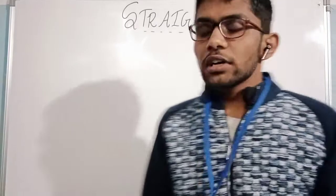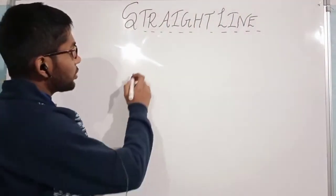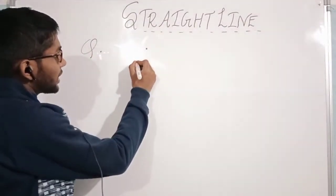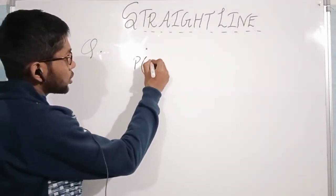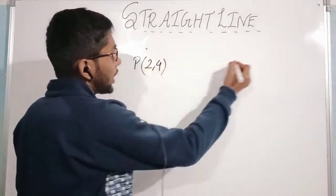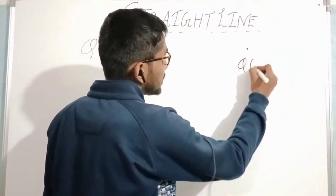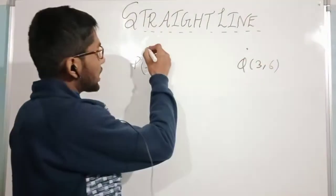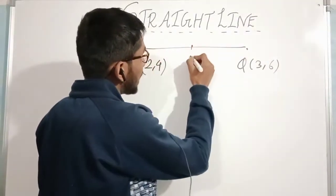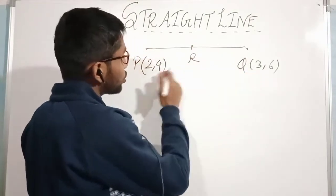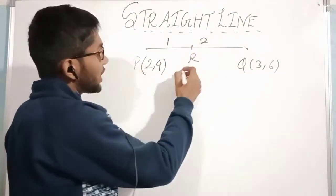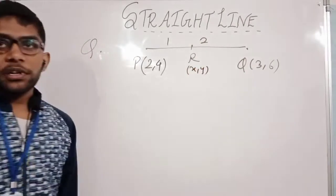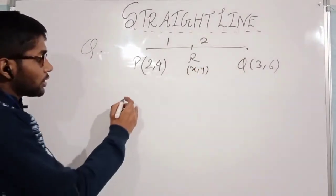Let's look at an example for section formula. Suppose point P has coordinates (2, 4) and Q has coordinates (3, 6). Point R divides PQ in the ratio 1:2. Find the coordinates of R.